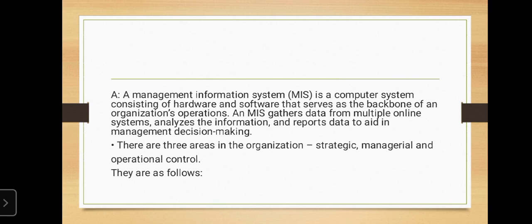A management information system is a computer system consisting of hardware and software that serves as the backbone of an organization's operations. An MIS gathers data from multiple online systems, analyzes the information, and reports data to aid in management decision making. There are three areas in the organization: strategic, managerial, and operational control.